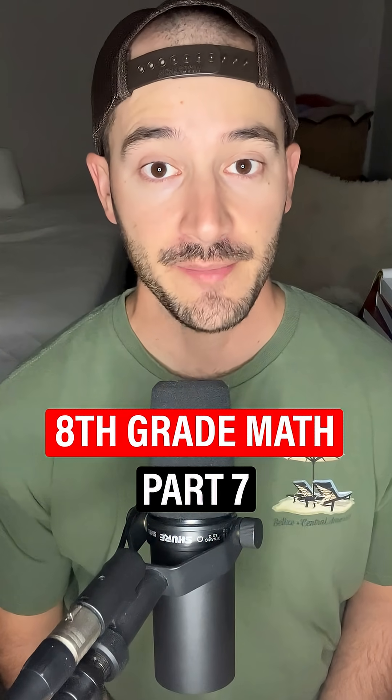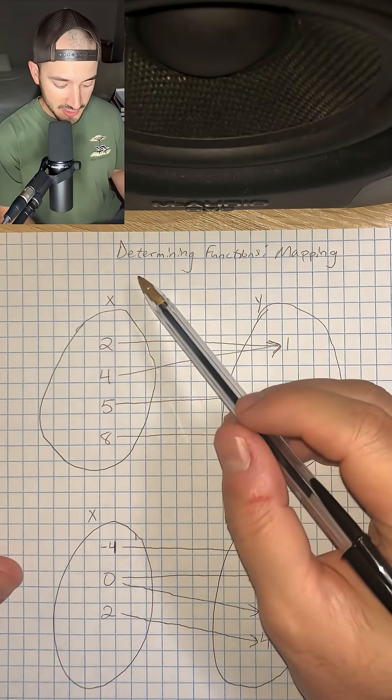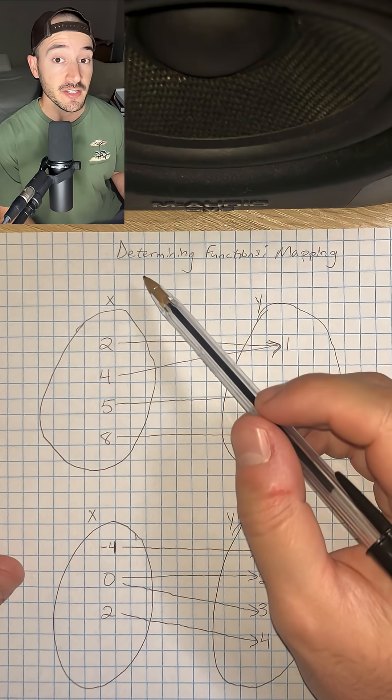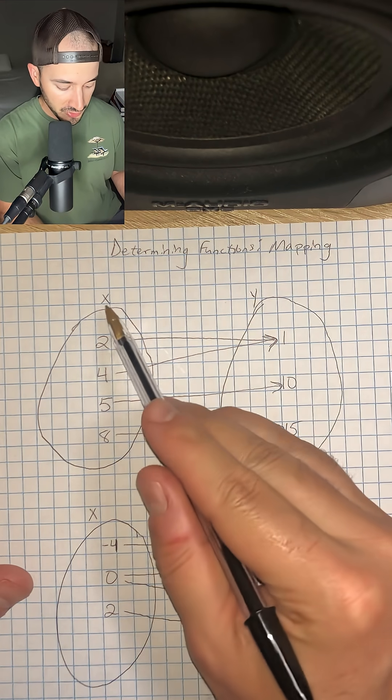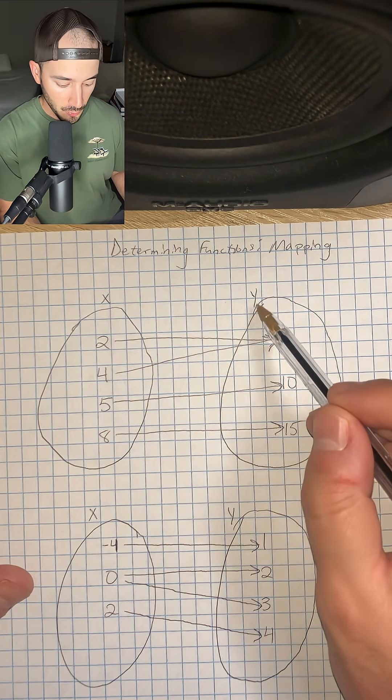This is everything you need to know for eighth grade math part seven. We're still talking about functions and this time we're talking about mappings. Mappings are just two circles or two ovals, one with the x values and the other with the y values.